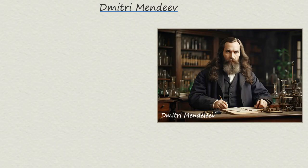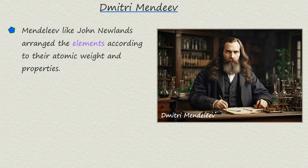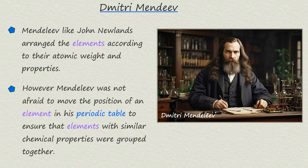In 1869, Dmitry Mendeleev, a Russian chemist, unveiled his new periodic table, which, like Newlands' periodic table, arranged the elements according to their atomic weights and chemical properties. However, Mendeleev was not always strict about arranging the elements by their atomic weights, and he was not afraid to move the position of an element in his periodic table.